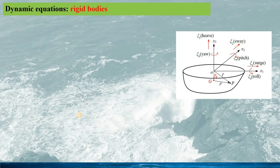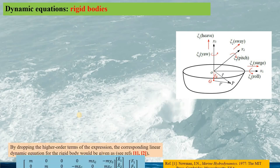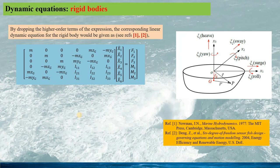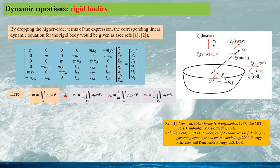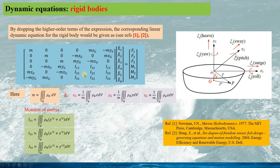For the rigid body motion in waves, the dynamic equation can be given in a form for the 6 degrees of freedom motion. If you would like to know the details, you may find the information in these references, or watch my talk on the principle of wave energy conversion. Here M is the mass of the structure, calculated as shown, and xg, yg, and zg are the coordinates of the center of gravity of the structure, which are calculated using these expressions. The capital I here are the moments of inertia.